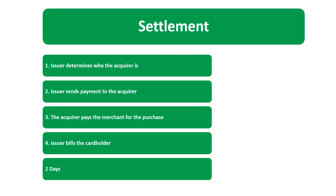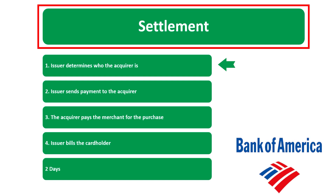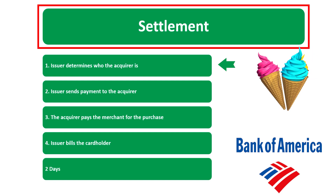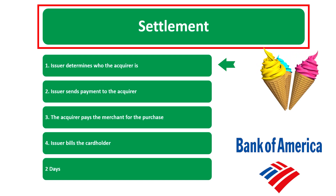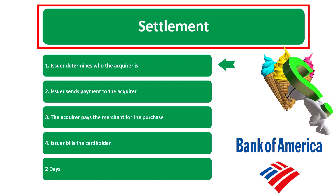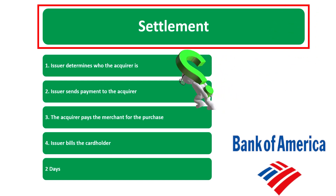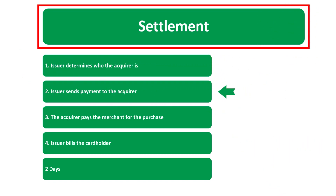Our final step in this process is settlement. First, the issuer — your bank, the entity that gave you your card — determines who the acquirer is. Basically your bank determines which bank belongs to the merchant where you are buying or paying for that ice cream.